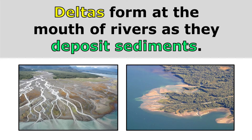Deltas form at the mouth of rivers as they deposit sediments. As a river enters the ocean, the water slows down. This causes the sediments that are being carried by the river to settle out of the water. Over time, this deposition of sediments builds up into a delta.